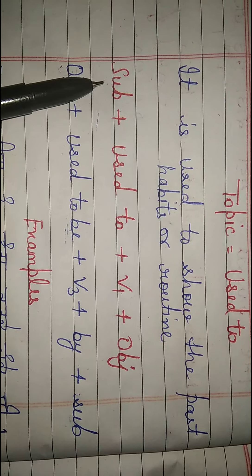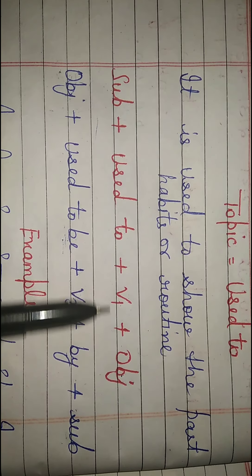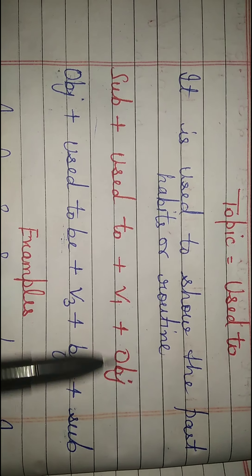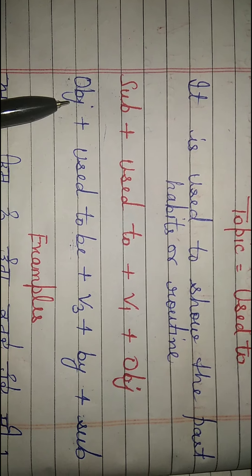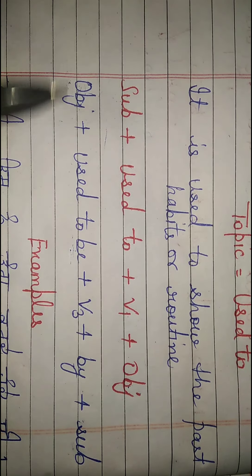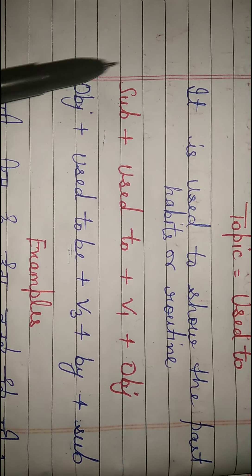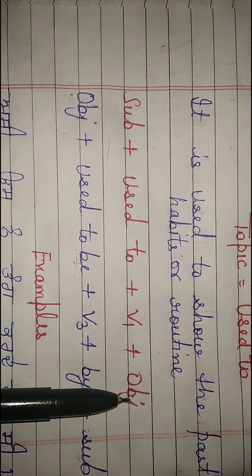The active structure is: Subject + used to + verb in the first form + object. This is the active structure, where the subject is the doer — the one performing the action.